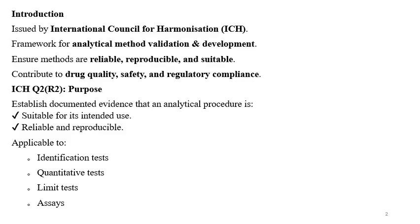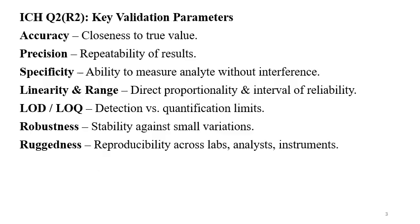Validation is about establishing documented evidence that a system or process works as per requirements, consistently and reproducibly. The same principle applies to analytical method validation. It is applicable to identification tests, quantitative tests, limit tests, assays, and many more. ICH Q2 provides validation parameters such as accuracy, precision, specificity, linearity, and range.